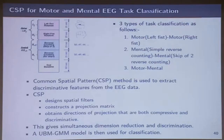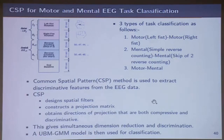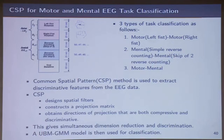Finally, we did motor and mental activity classification. You're moving your wrist or imagining movement of the wrist versus mental activity — we ask people to count, simple reverse counting, skip-of-two reverse counting — and we want to distinguish between the two. We use what is called common spatial patterns method to extract discriminative features from the EEG data. For a two-class problem, you take each trial with N channels and T sample length, compute sample covariance matrices, normalize them, and work with these for the two tasks.